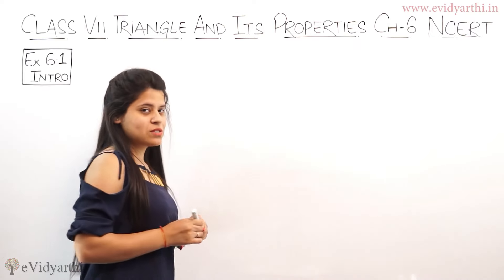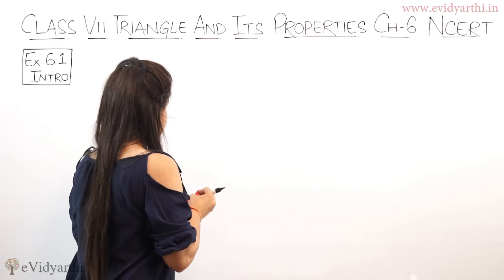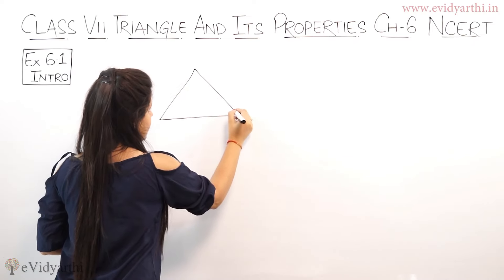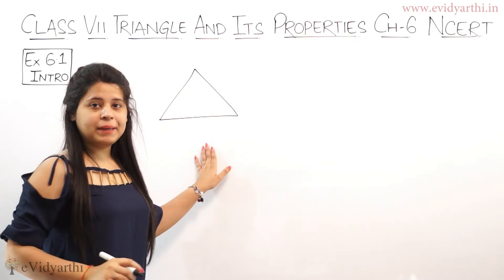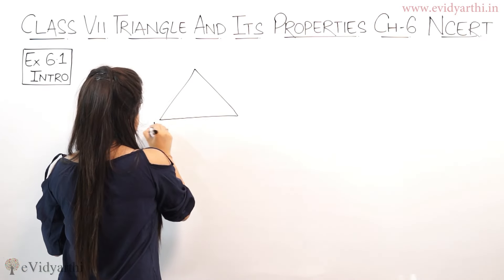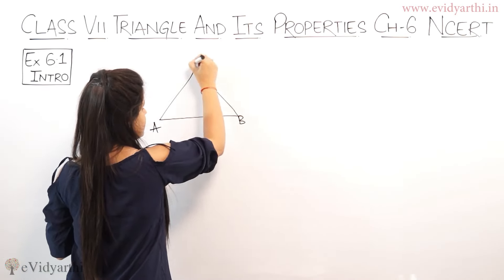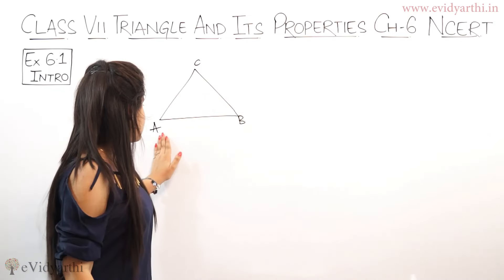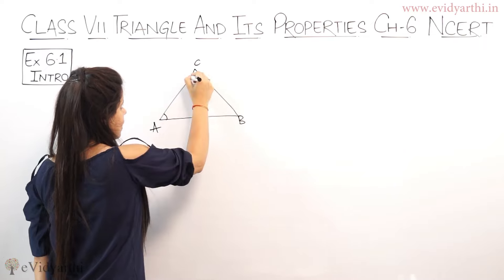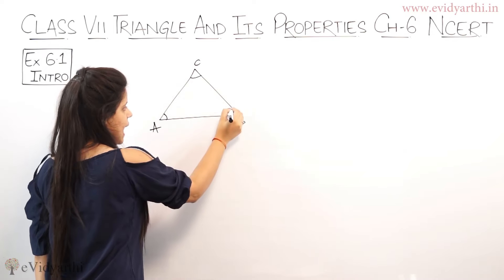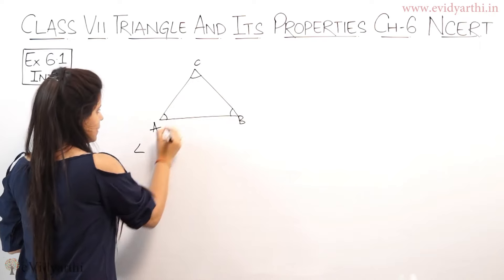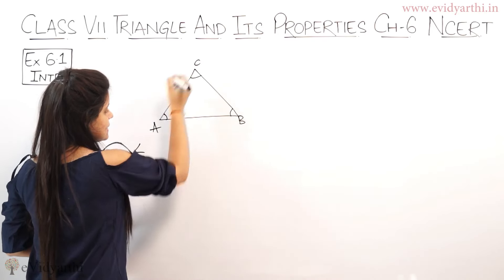Everyone knows what a triangle is. So let's suppose I am taking a triangle here. Now let's name it as ABC. So this is triangle ABC. Now this, this, and this are its angles. This angle one is CAB.